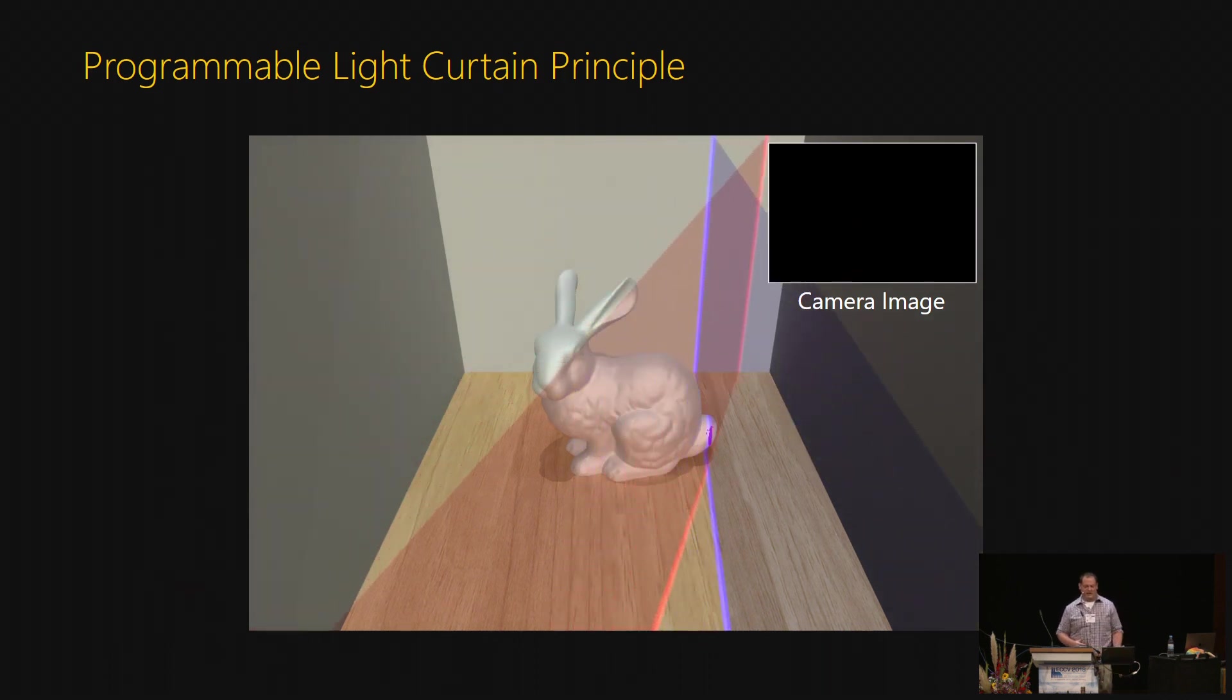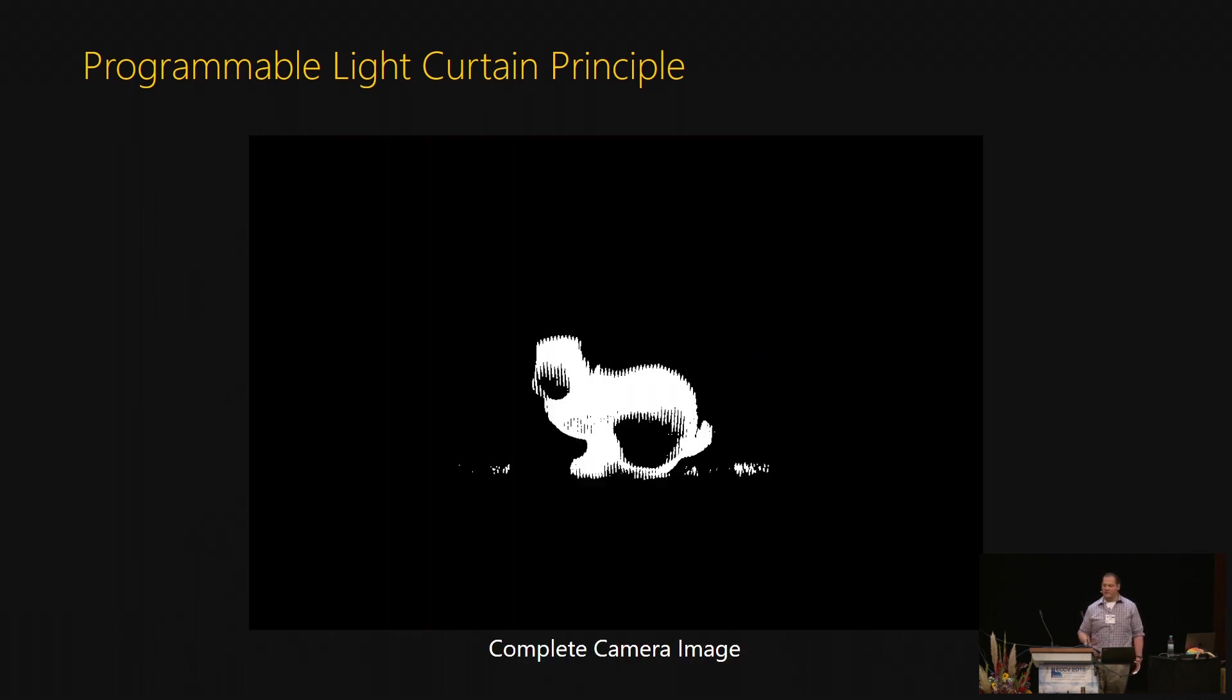Now, you can move this line around and you can create any ruled surface that you want. Here, we are moving the line to create a plane, just like a normal light curtain. The output of the system is a binary mapping of where objects were detected in the scene.